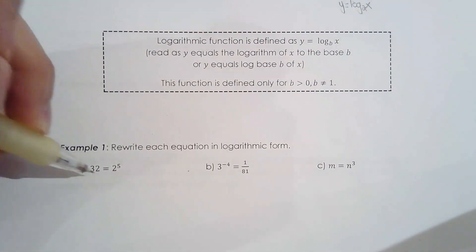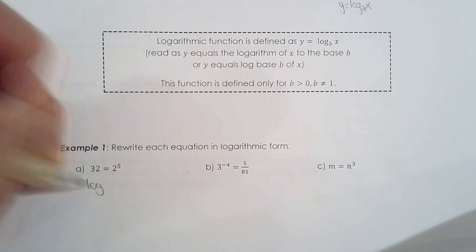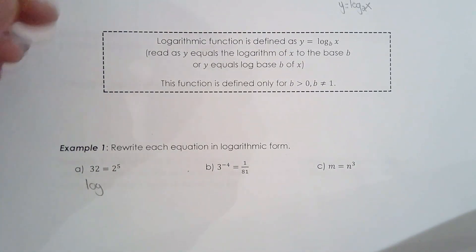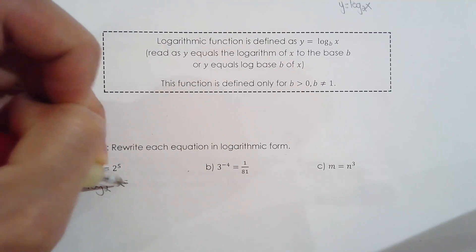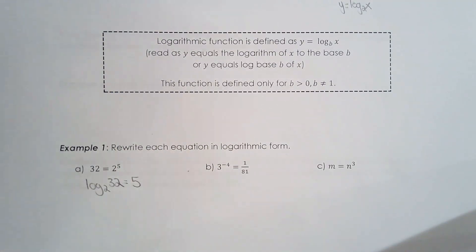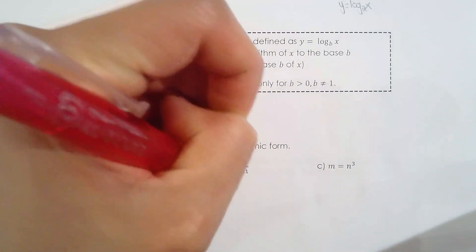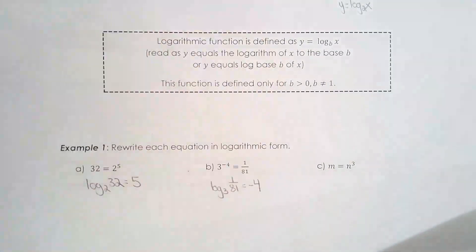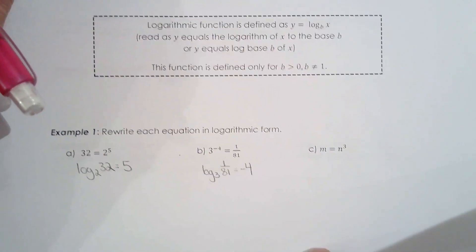Let's rewrite each in logarithmic form. For the first: the base of the logarithm is the base of the power, so we write log base 2 — the argument is 32, and it's equal to the exponent. Second: logarithm of base 3, argument 1 over 81, and the exponent is negative 4. Third: the base of the logarithm is the base of the power, the argument is m, and the exponent is 3. Once you get a few reps, it becomes pretty straightforward.